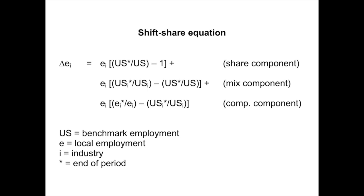The left-hand side of the equation shows a triangle that stands for delta, and the letter E with the subscript i. Since the delta symbol represents change and E_i stands for local employment in an industry, the whole left side of the equation represents the change in the local economy in the industry that you're studying. So if you're studying the restaurant industry in Austin, Texas, then the left-hand side is the change in employment in Austin's restaurant industry over time. The value could be positive if the industry grew, negative if the industry declined, or even equal to zero if restaurant employment in Austin did not change.